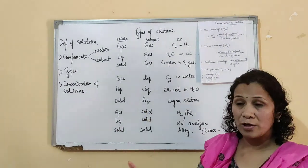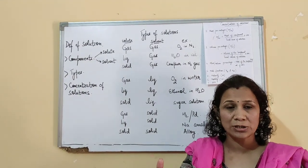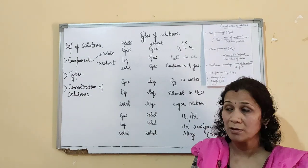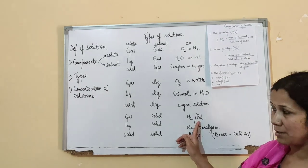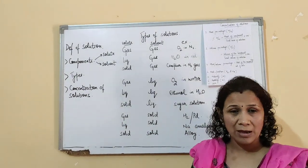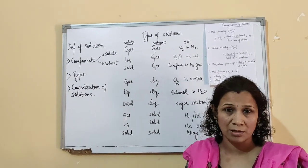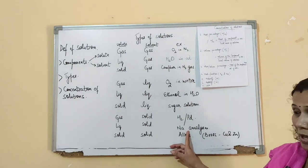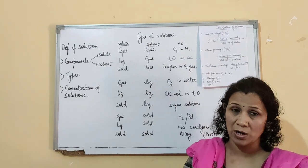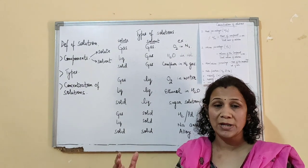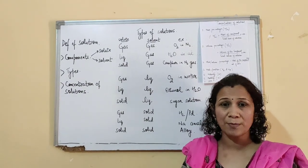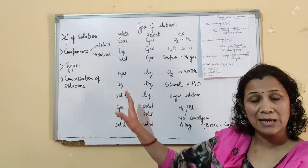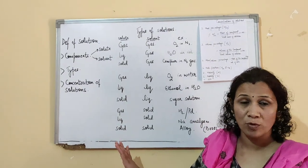Coming to gas in solid — we use hydrogen gas as a catalyst and pass it over a surface of palladium or platinum. That process is known as hydrogenation. So hydrogen over palladium is an example of gas in solid. For liquid in solid, we have amalgams — which are associated with mercury. Mercury is in liquid state, and if any metal is dissolved in mercury we call it an amalgam; for example, sodium amalgam. The last type is solid in solid — we call it alloys, which are a mixture of two metals in some proportion to change and obtain a different set of properties.